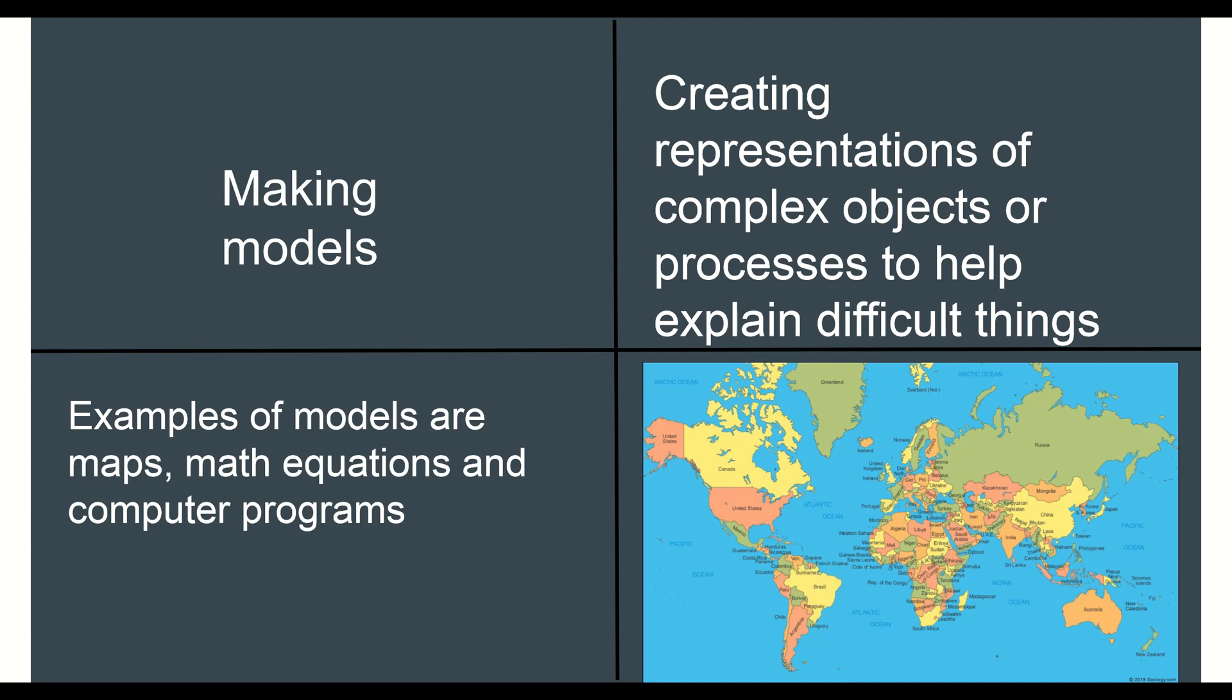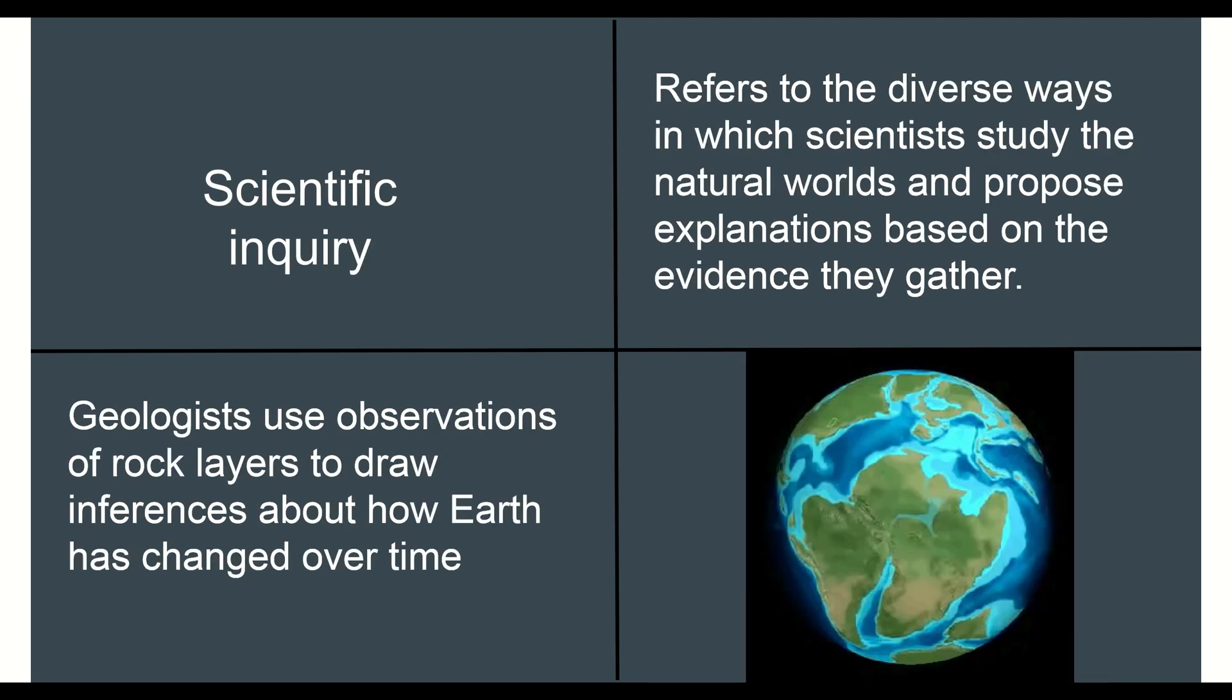We'll spend a lot of time looking at models because they're very common in science because some of the things that we have are really hard to see. It's important to know that no model is perfect. There may be errors in some of those models, and that makes sense too. If a model was perfect, it would cease being a model and it would be the actual thing.